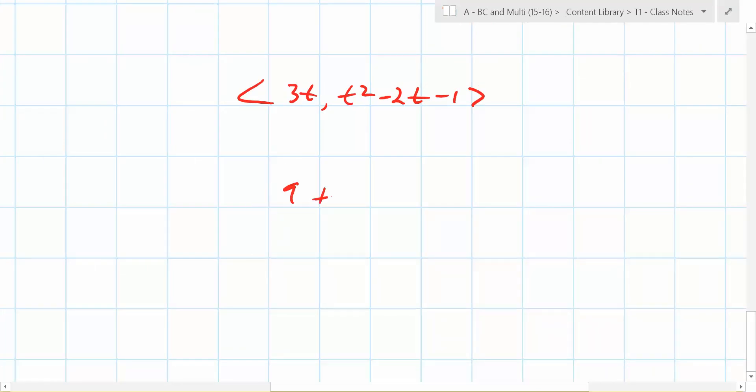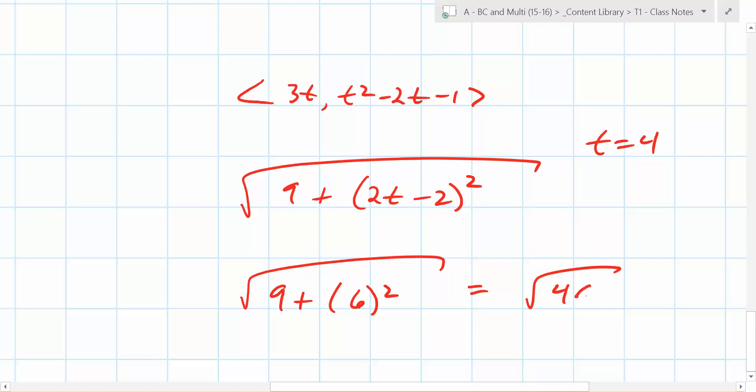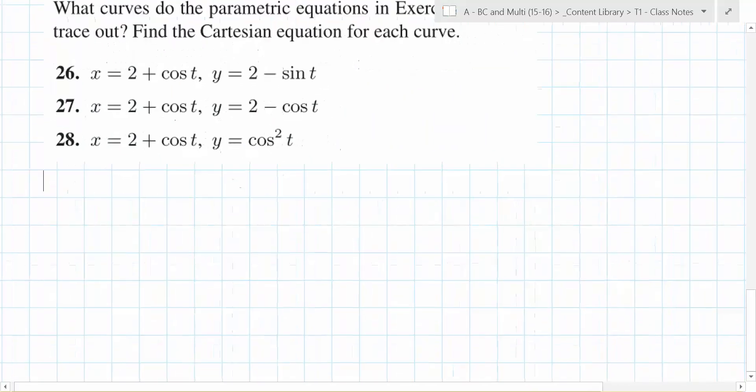9 plus 2t minus 2 squared, like this? Correct? So what do we plug in for t? 4. So you have the square root of 9 plus 8 minus 2 squared. Is that correct? Yeah, so that one's moving faster. Yeah, so this is going to be the square root of 45. So which one's moving faster?